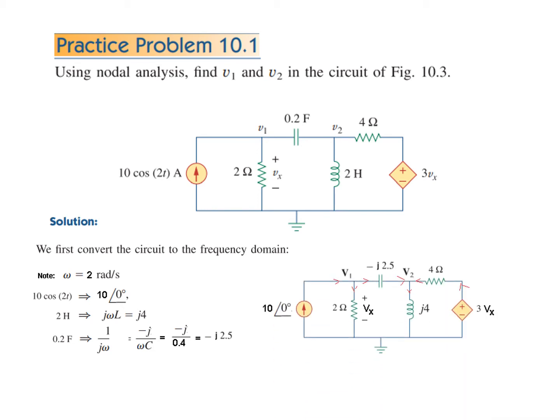So our phasor circuit will look like this: the current source has been transformed, capacitor transformed, inductor transformed.